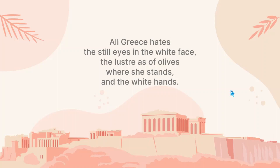Now let us go to the text of the poem. It starts with a bitter note of hatred: 'All Greece hates the still eyes in the white face.' The eyes and face — the beauty of Helen's face — is most of the time praised, but now the poet brings a note of hatred toward them. 'All Greece hates the still eyes in the white face, the luster as of olives where she stands, and the white hands.' All things related to the colors and appearances of her body are represented as something to be hated by the poet.